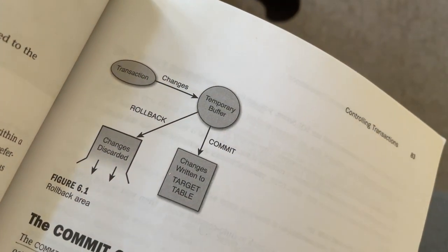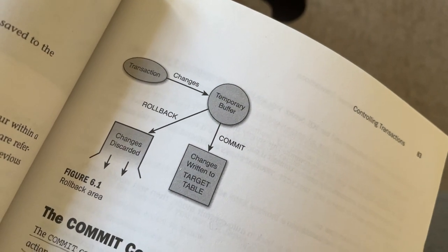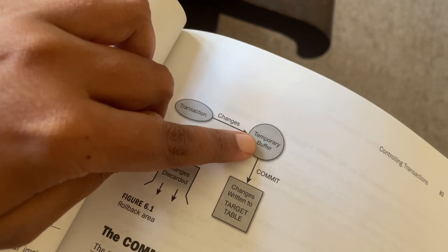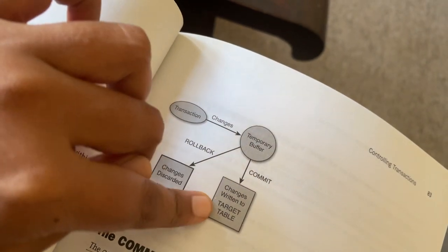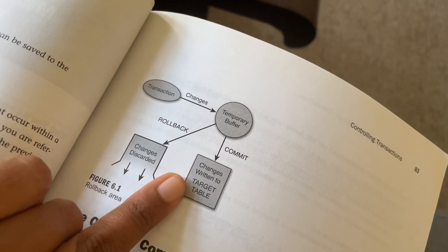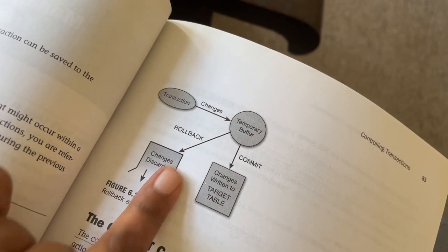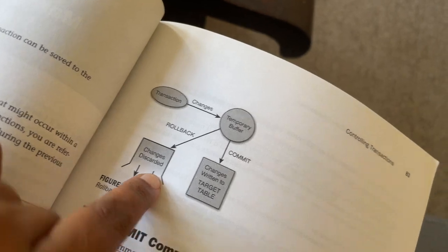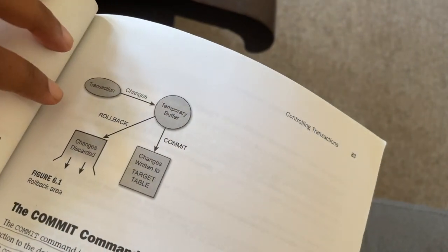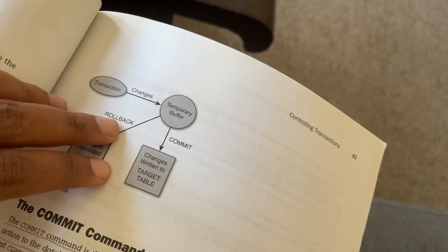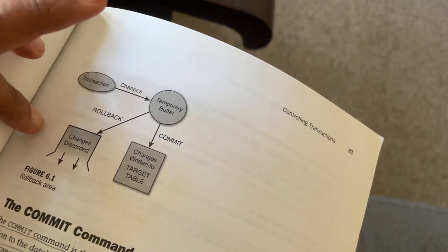They had a helpful diagram. When a transaction is being executed, the data is temporarily stored in a rollback area called a temporary buffer. Then if you issue a commit command, it will make the changes to the target table. Or if you don't want to commit the changes, you can roll back and the changes are discarded. The savepoint is a point in the transaction that you can roll back to just that point, so that you don't have to discard the entire transaction.